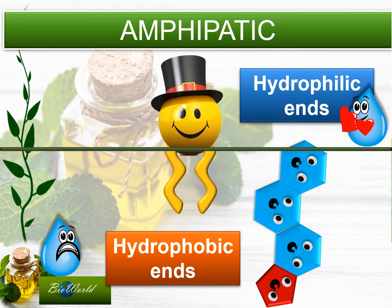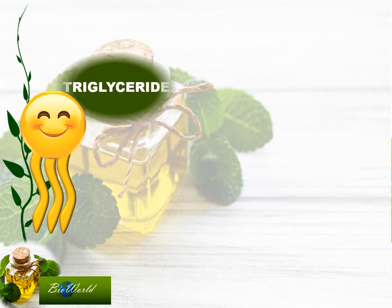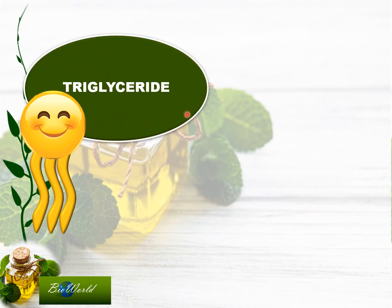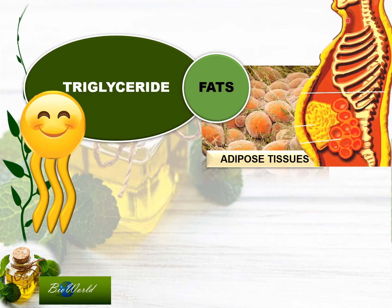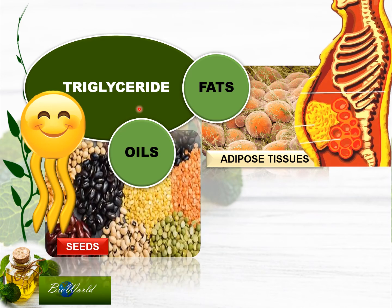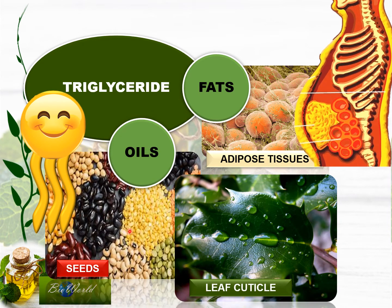Let's move on to discuss triglycerides. Triglycerides have two examples: fats and oils. Fats are stored in adipose tissues located under the animal skin as well as around the organs. Oils are found in the seeds of plants as well as the cuticles of leaves. So fats are found in animals whereas oils are found in plants.